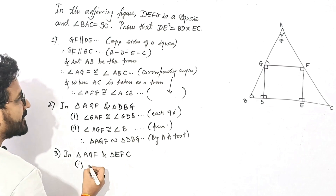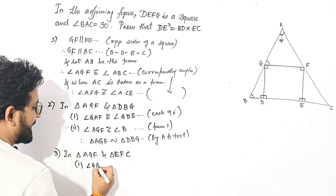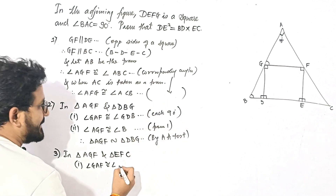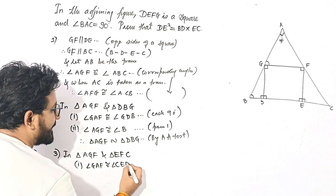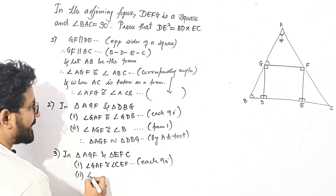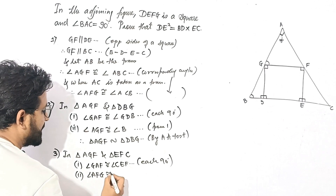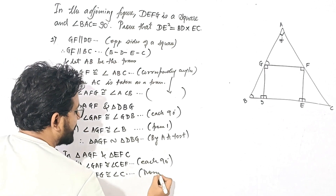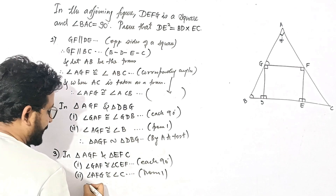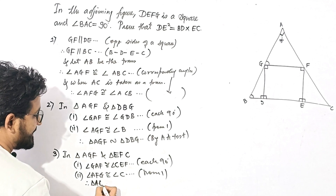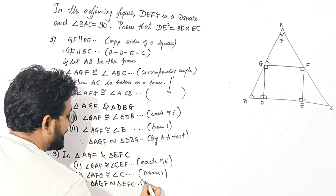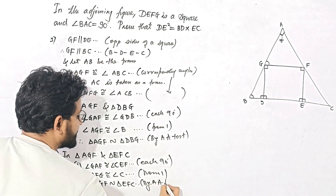So now, first: angle GAF is congruent to angle CEF — each 90 degrees. And second, angle AFG is congruent to angle C — from step 1, they are corresponding angles. Therefore triangle AGF is similar to triangle EFC by AA test of similarity.